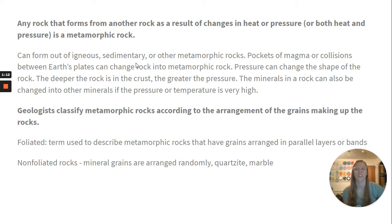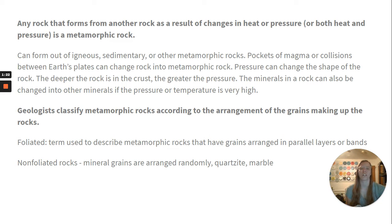It can form out of igneous, sedimentary, or other metamorphic rocks. Pockets of magma or collisions between Earth's plates can change rock into metamorphic rock. Pressure can change the shape of the rock. The deeper the rock is in the crust, the greater the pressure. The minerals in a rock can also be changed into other minerals if the pressure or temperature is very high.